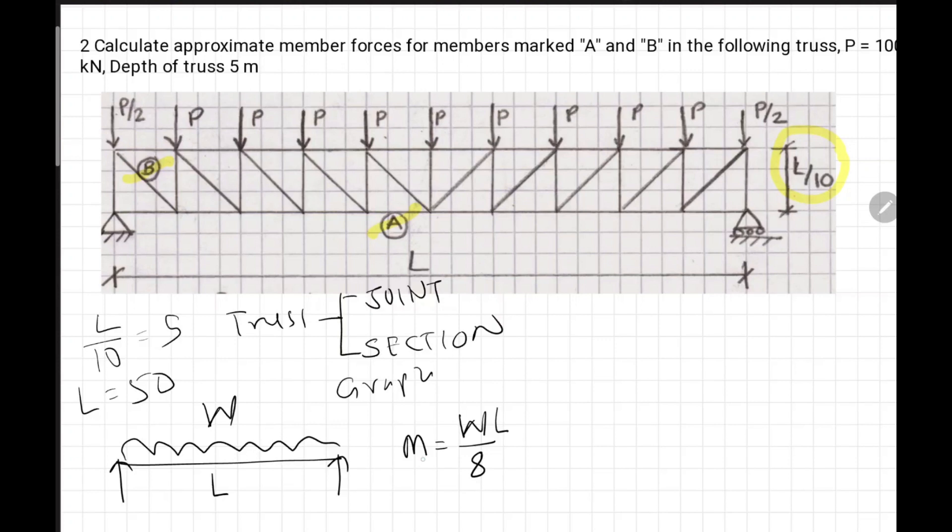Once we know the moment at mid-span, it is carried by push-pull between top chord and bottom chord. The bottom chord will go under tension, top chord under compression. If I have to find out force in member A, which I will write F_A, span 5 meters. We know the total load, I can sum - total load is 9P. Moment will be 9P times L over 8.